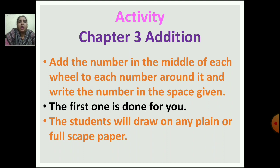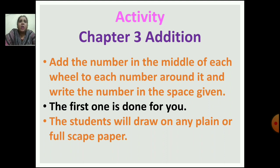For the activity, the chapter you have to do is Chapter 3 — Addition. Add the number in the middle of each wheel to each number around it and write the answer in the space given. The first one is done for you. You can see how I have done the addition — in the same way you have to add the other numbers, find the answer, and write it. Students will draw on any plain or fullscape paper.